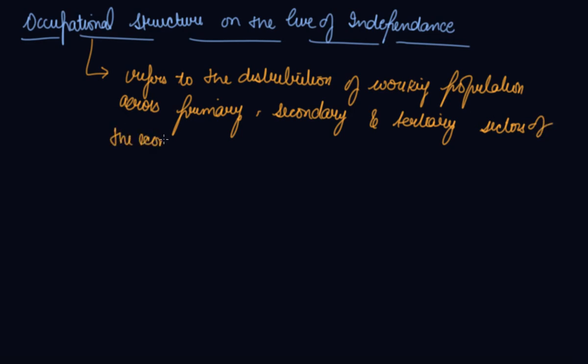How much of the population is working in the primary sector, how much is working in the secondary sector, and how much population is working in the tertiary sector is your occupational structure of an economy. So, during the Eve of Independence, what was the Occupational Structure of the Economy? Let's understand.